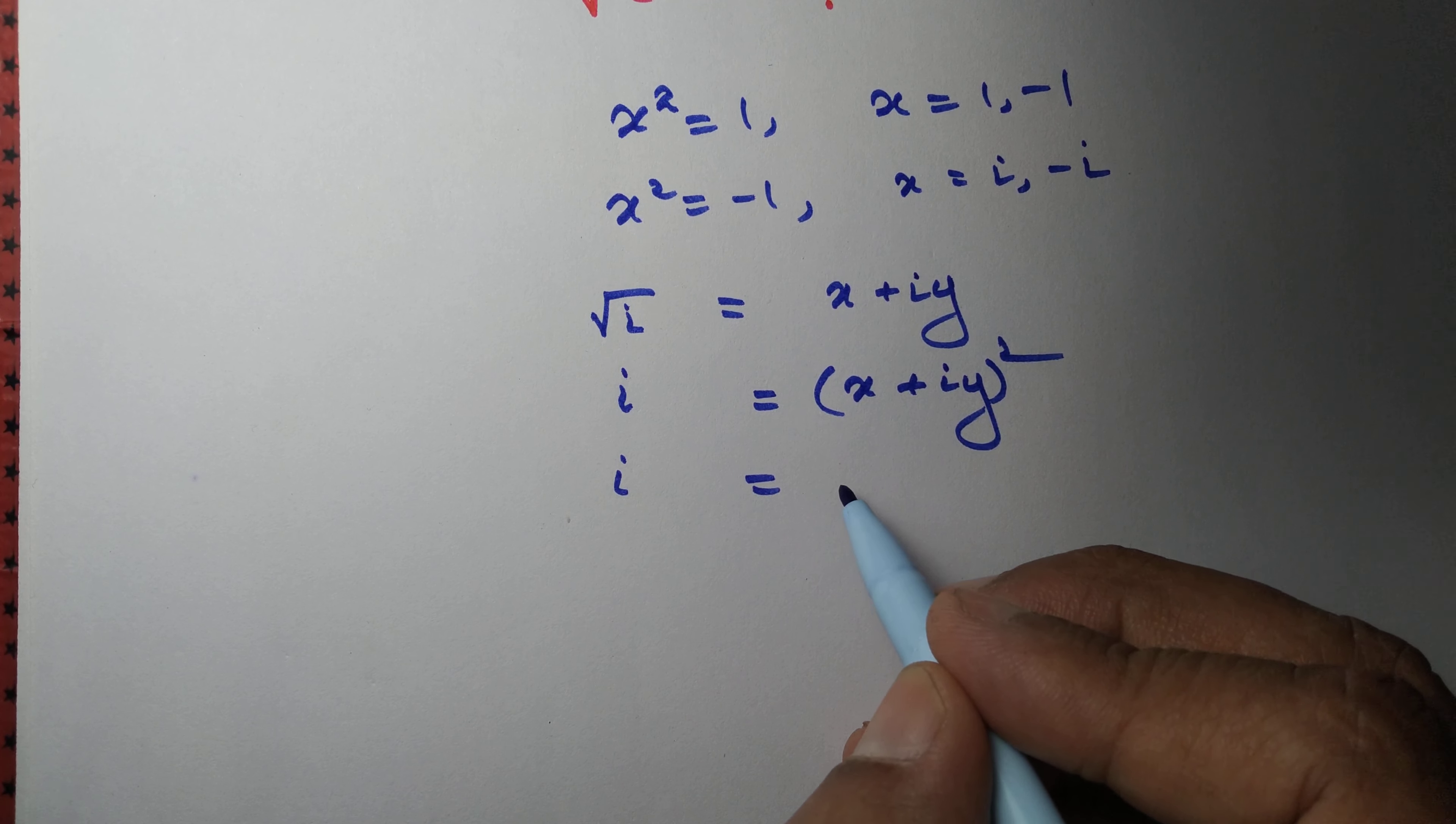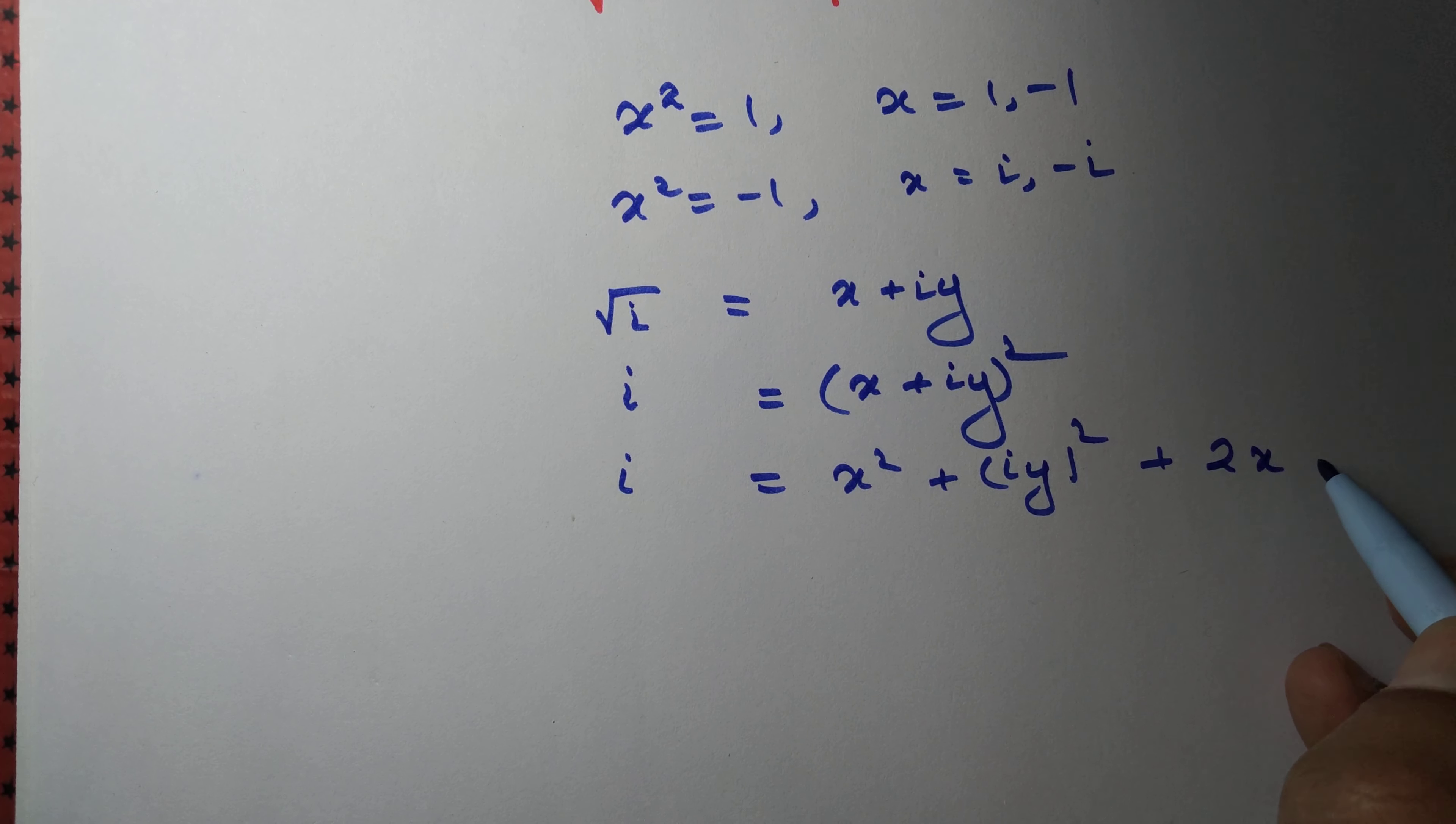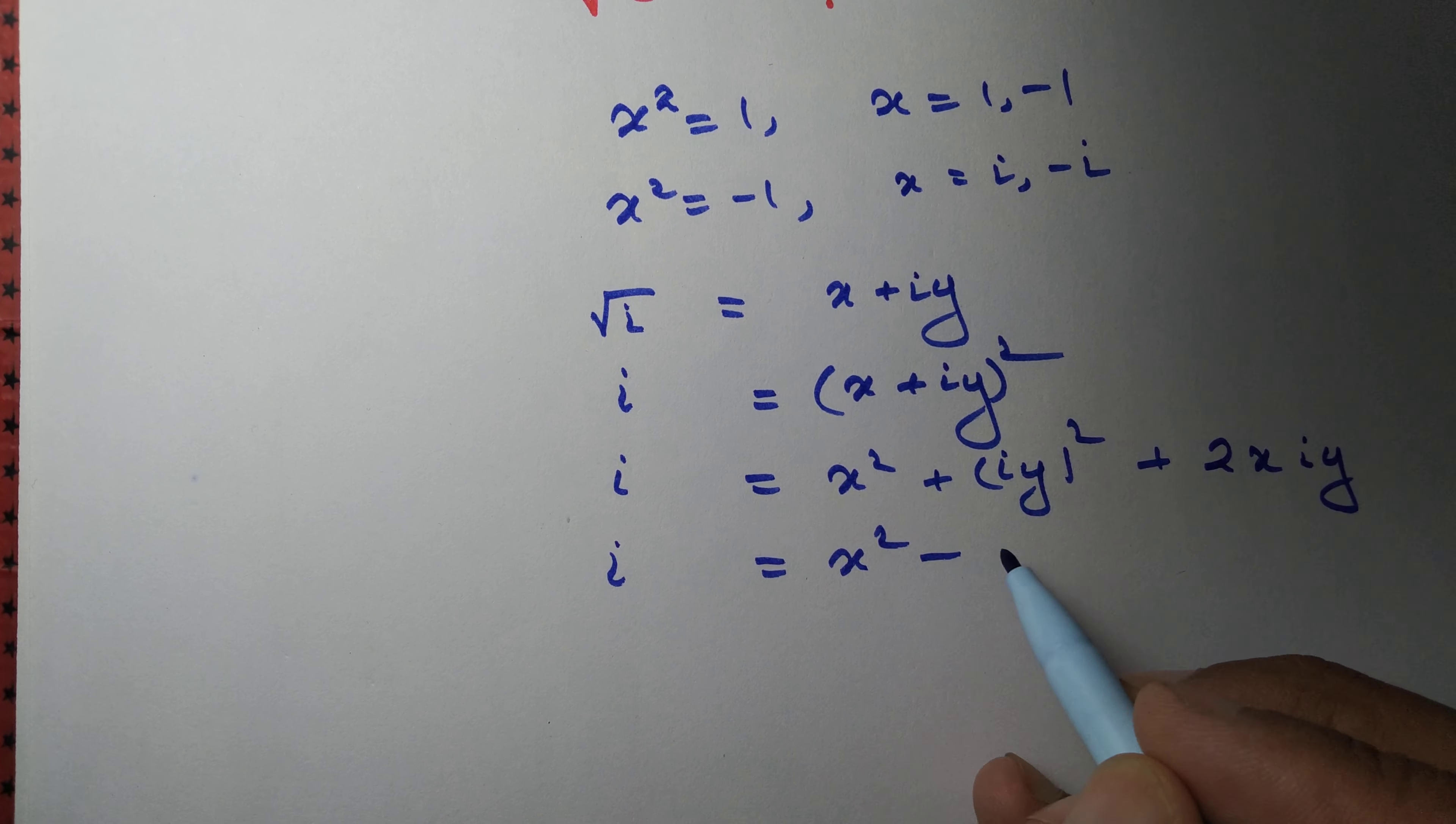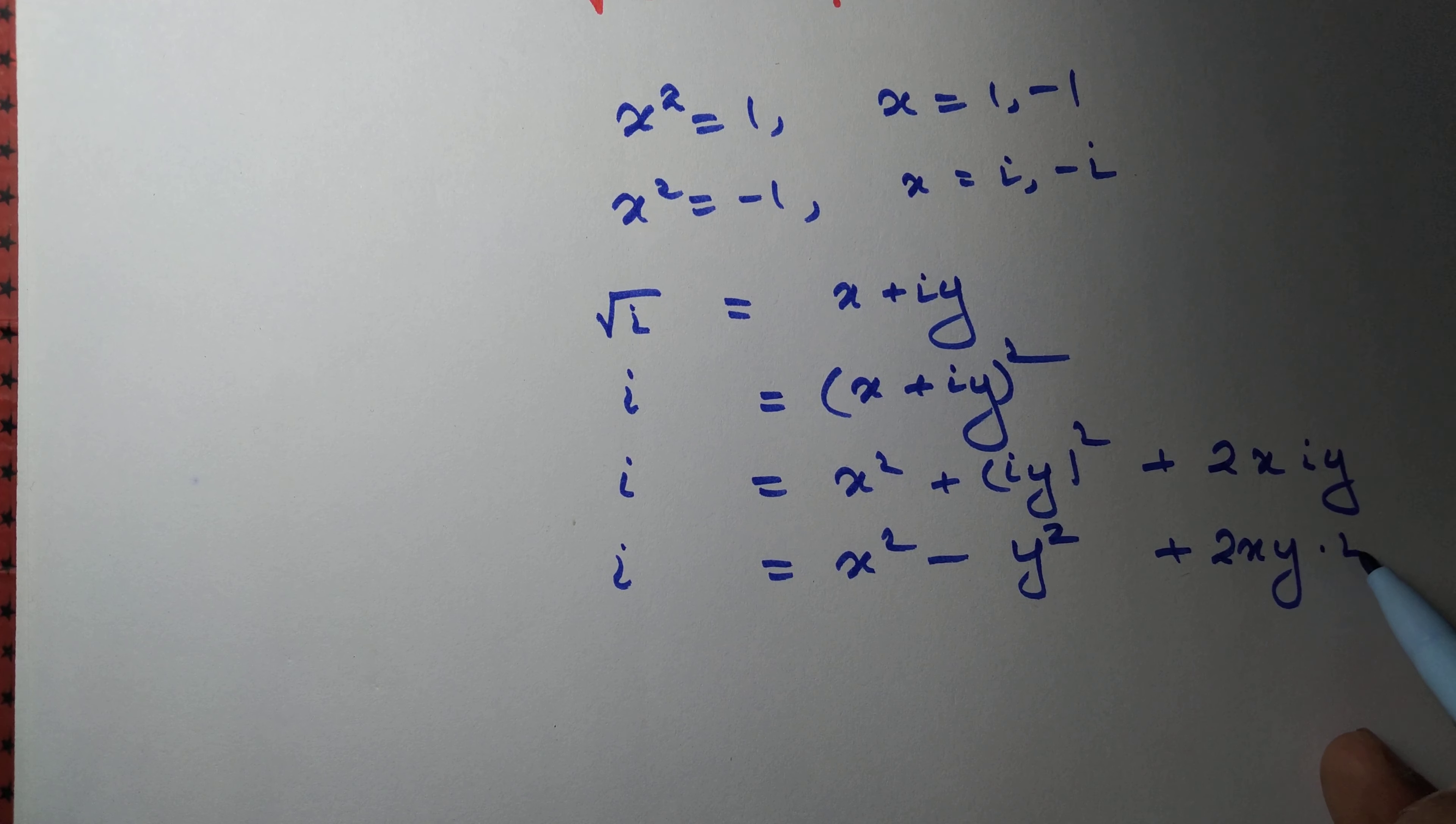So if we square it, we have x squared plus iy whole squared plus 2x times iy. But i squared equals minus 1. So this is equal to x squared minus y squared plus 2xy times i.